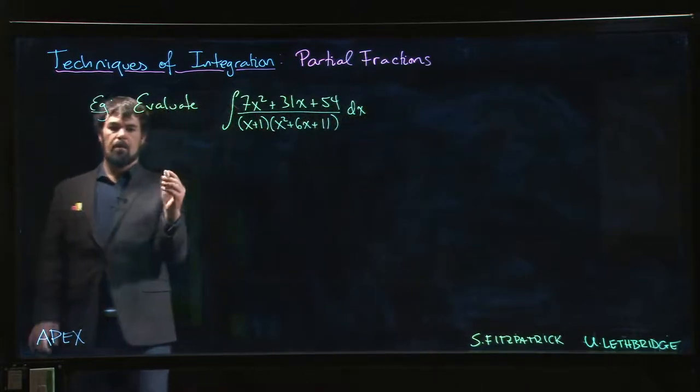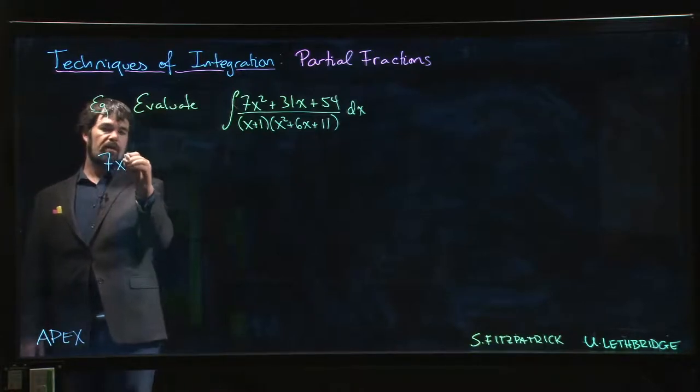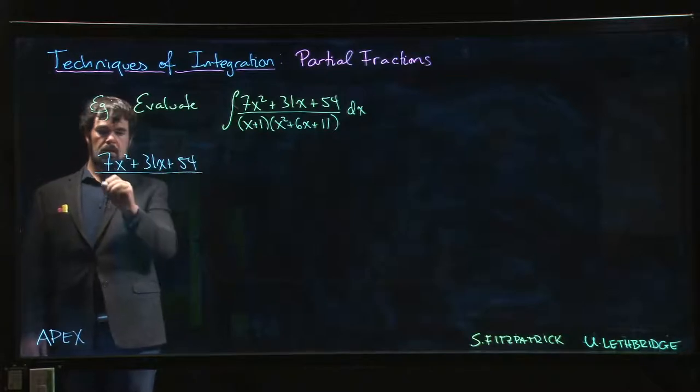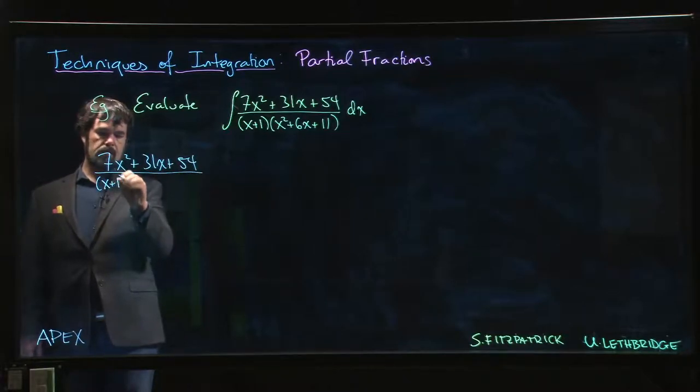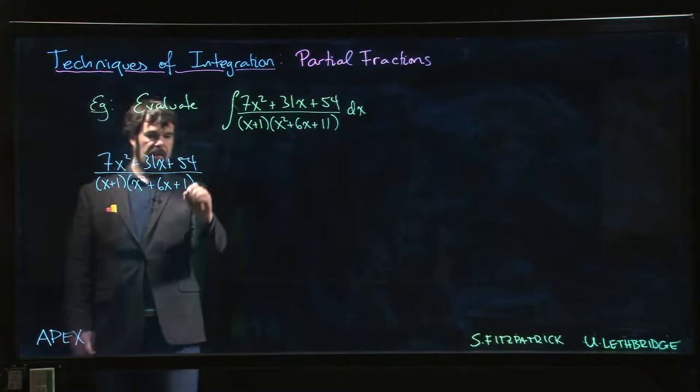We expect a partial fraction decomposition of the following form: 7x squared plus 31x plus 54 over x plus 1 times x squared plus 6x plus 11.